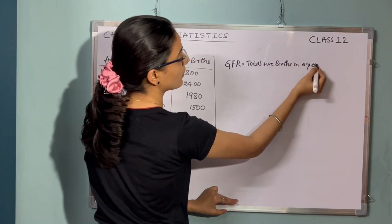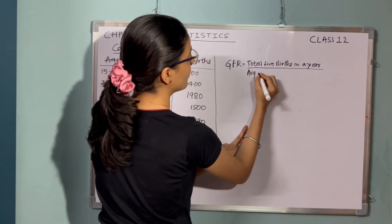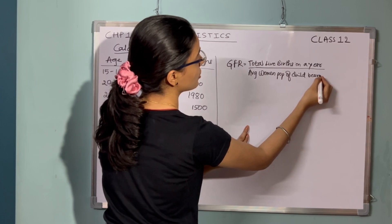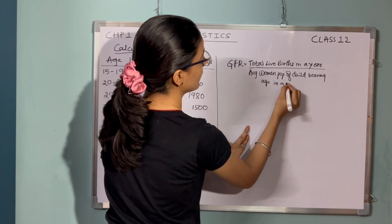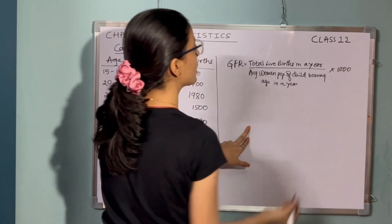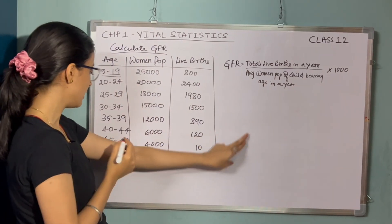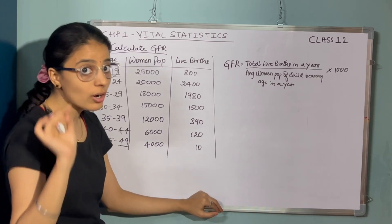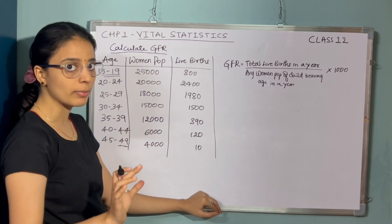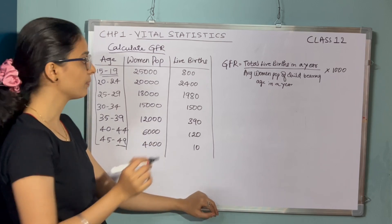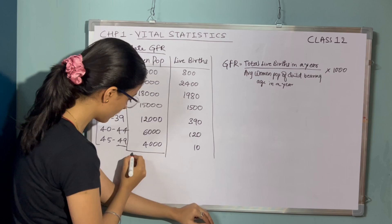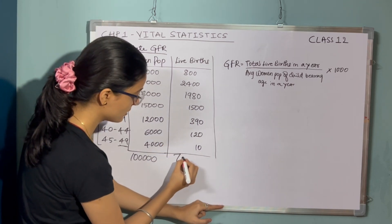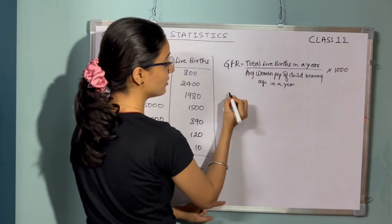...divided by average women population of child-bearing age in a year, into 1000. It is important to remember that child-bearing age is from 15 to 49. If any information is given for ages 0 to 14 or 50 and above, we do not consider that female population — we only take into account ages 15 to 49. So the female population will be 1,00,000 and live births will be 7,200.